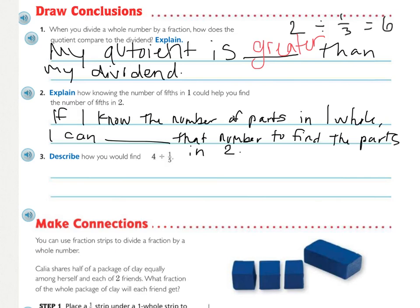I'd like you to think about this sentence and fill in the missing word. If I know the number of parts in one whole, I can blank that number to find the parts in two. What word would best fill in that sentence? You should have used the word multiply because, remember, we found it in one. If there's five fifths in one, in two there would be ten fifths.